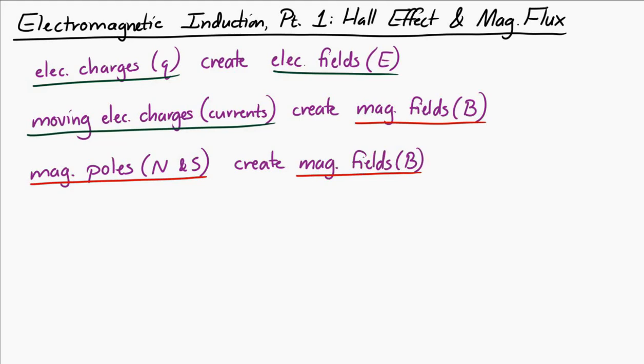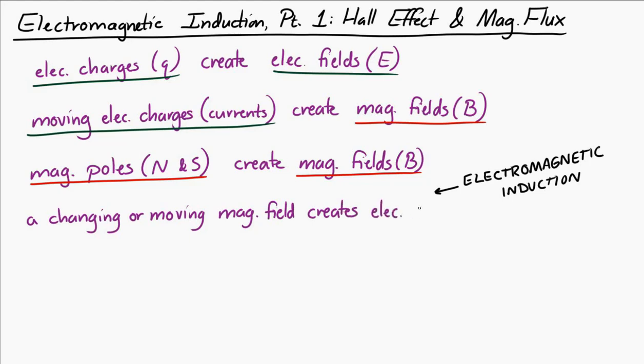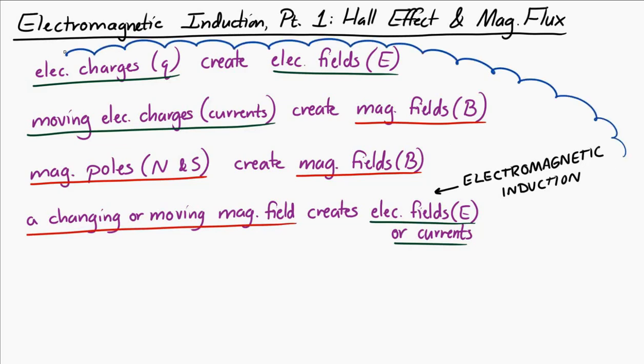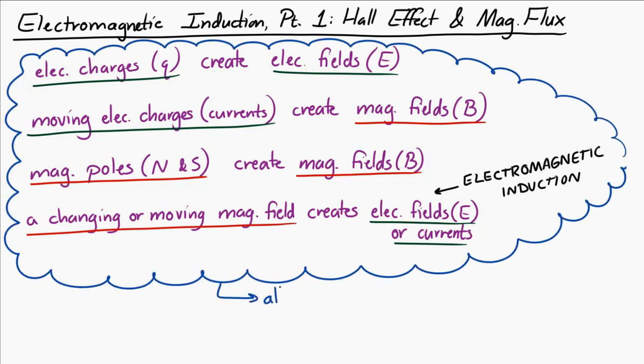And now we're going to start thinking about a fourth kind of phenomenon called Electromagnetic Induction. Electromagnetic Induction is the idea that a changing or moving magnetic field creates electric fields and currents. Now all of these things, all of these phenomena, are related in a topic called electromagnetism.